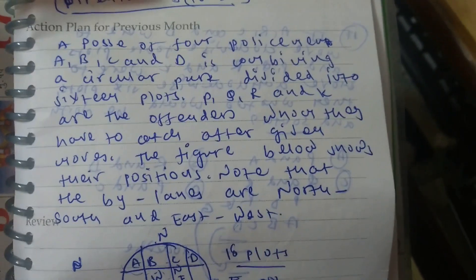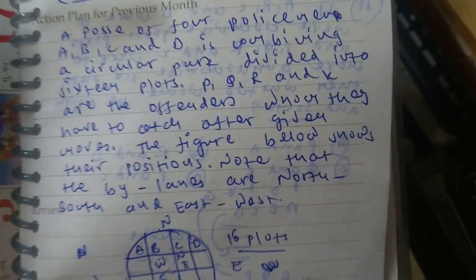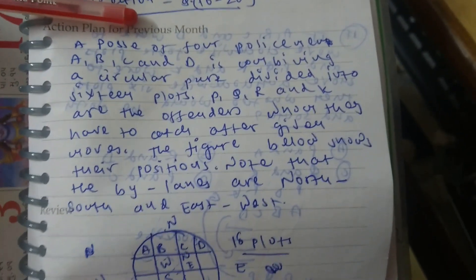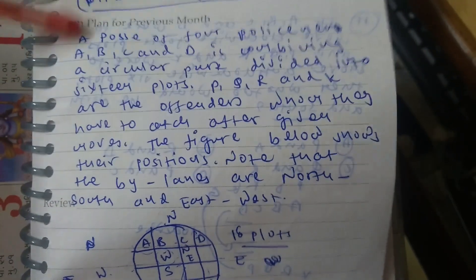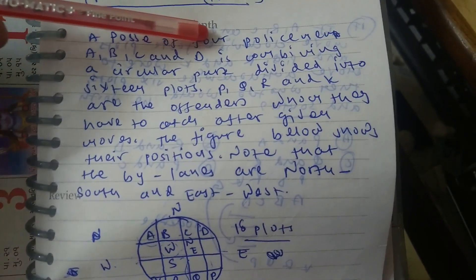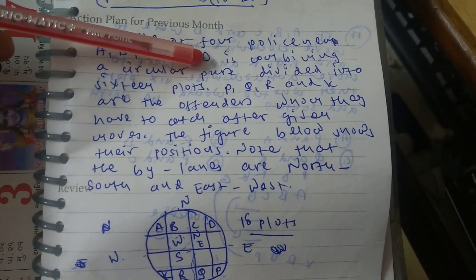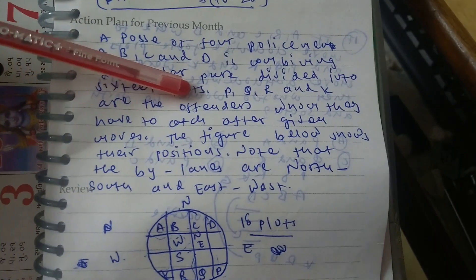This is about an effort of police to reach offenders. It is given that a posse of four policemen named A, B, C and D is combing a circular park that is divided into 16 plots.